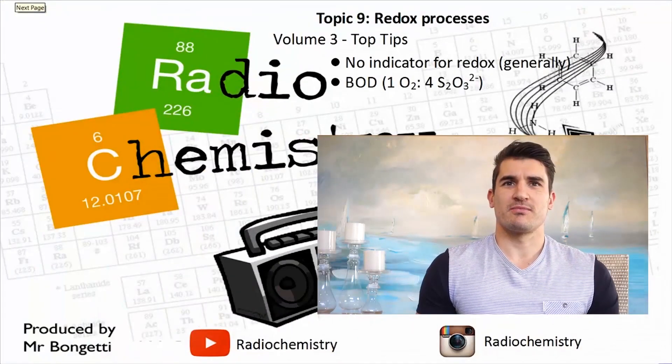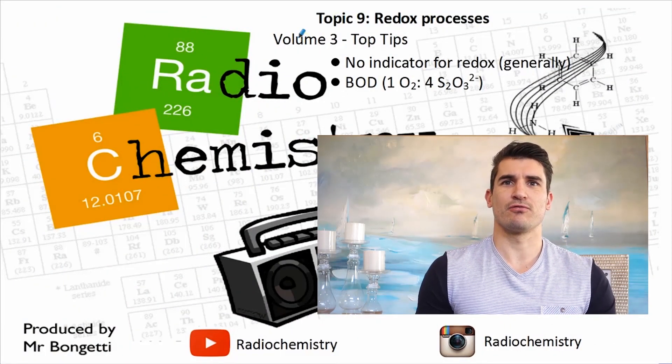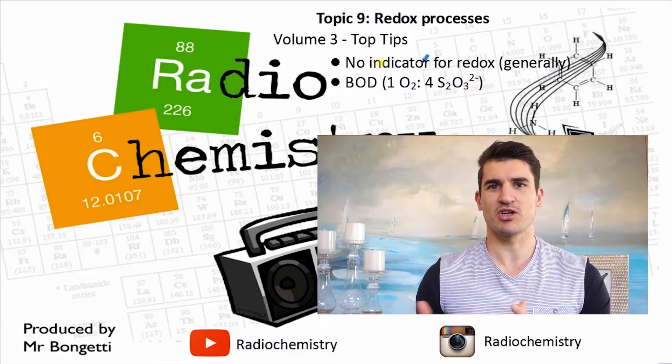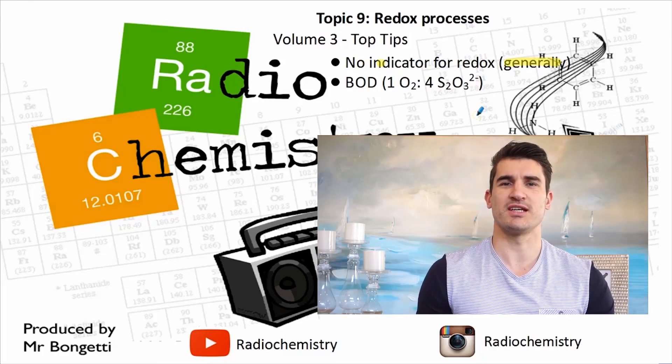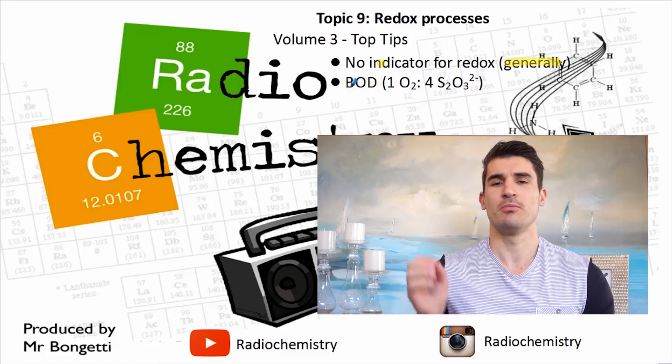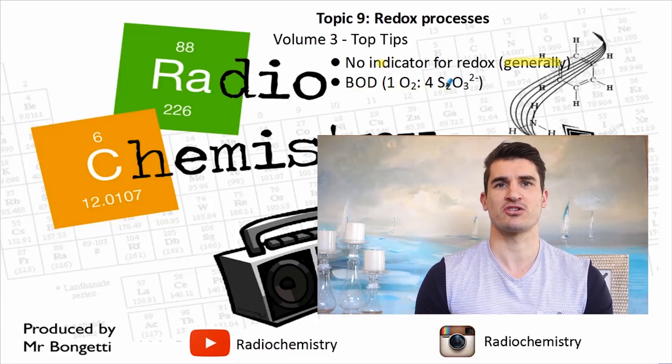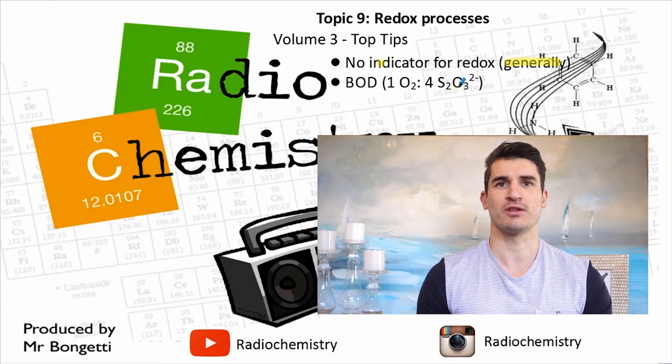Alright, Volume 3, some top tips. No indicator for redox reactions generally. Sometimes starch might be added. And remember for the BOD, we have 1 mole of oxygen per 4 moles of thiosulfate. So it's a 1 to 4 relationship.